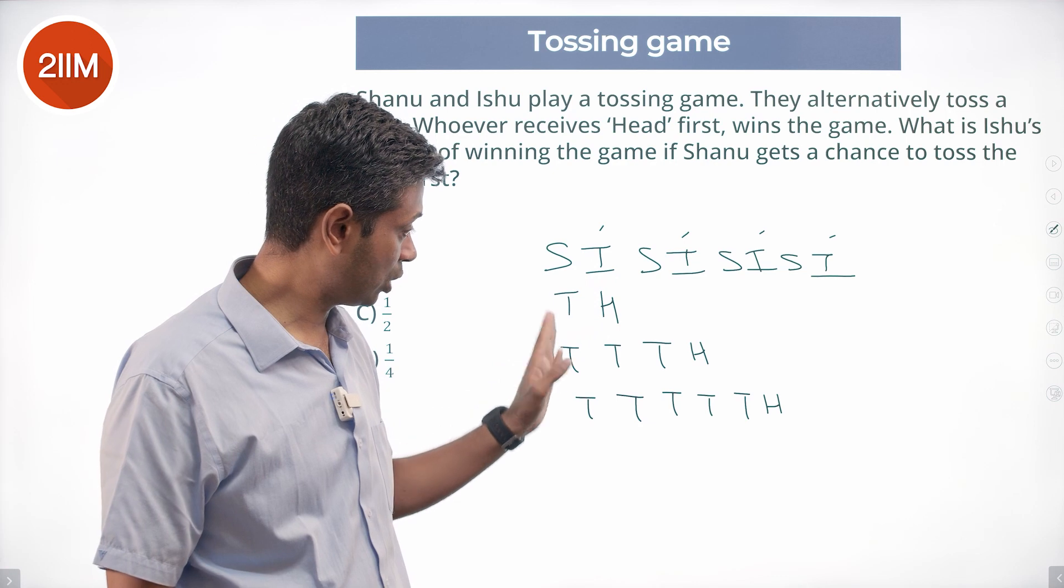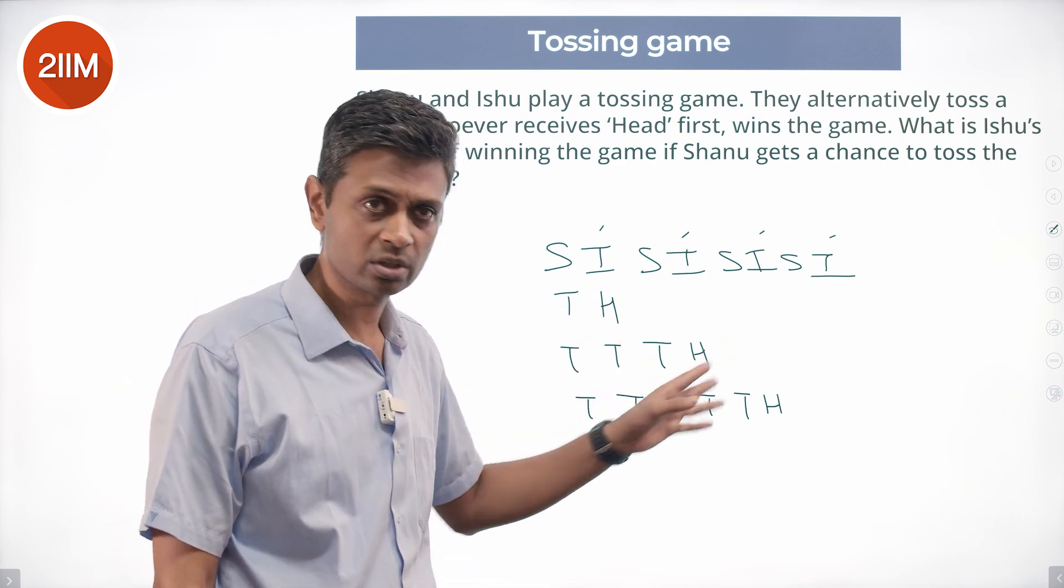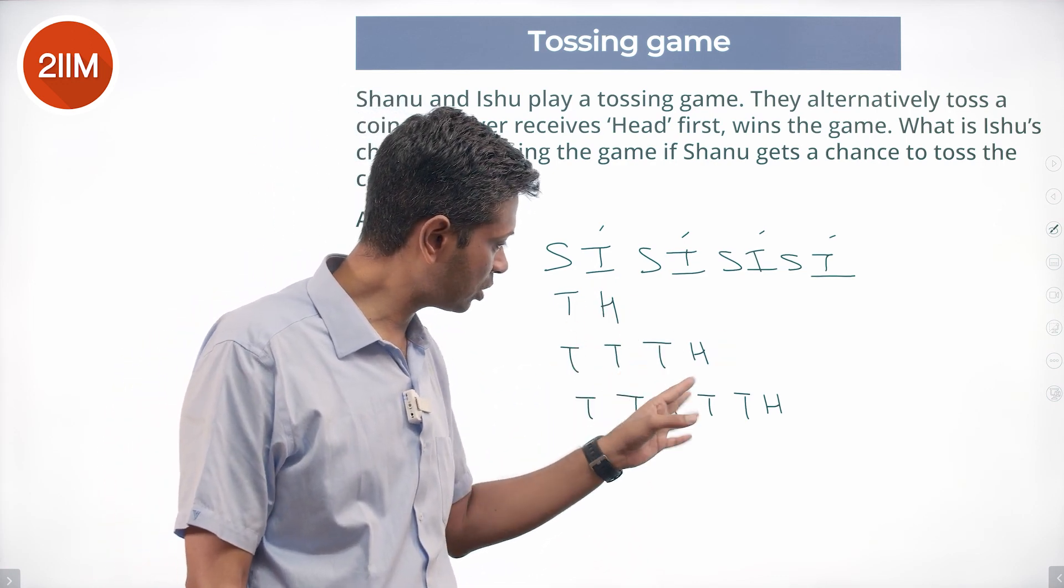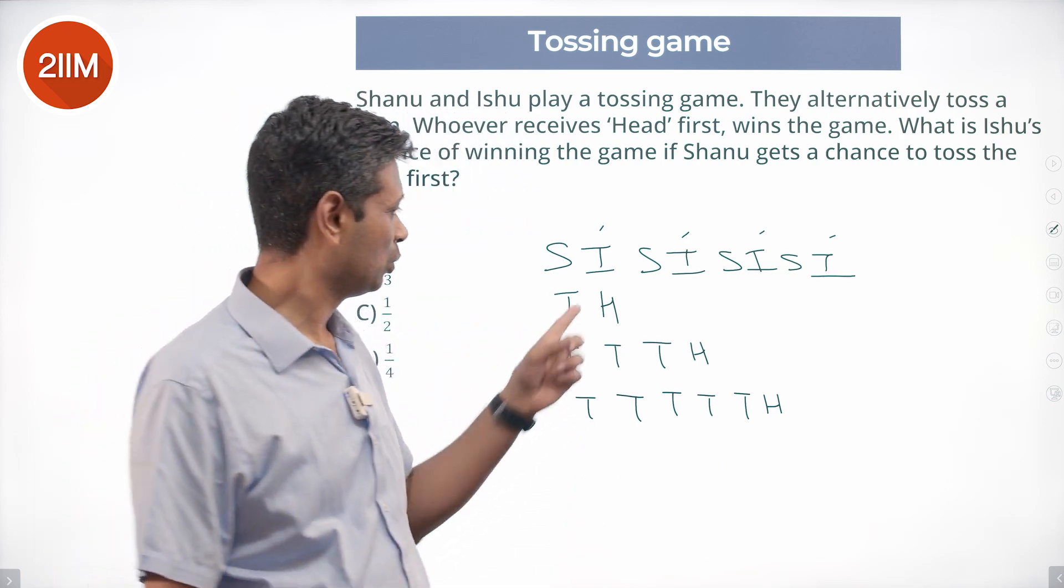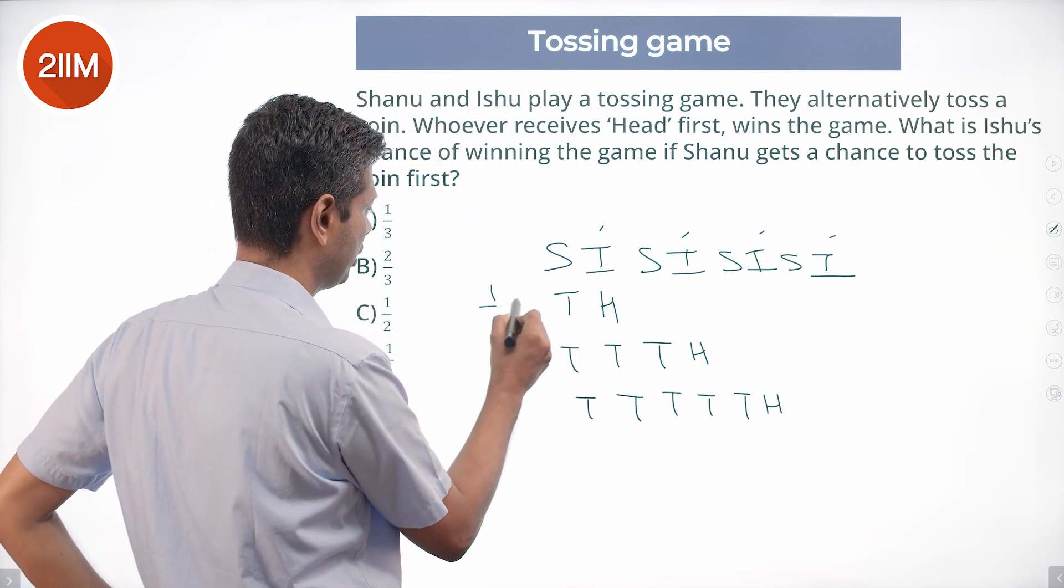The template of the question though: does not win, wins, does not win, does not win, does not win, wins. With a coin toss, what is the probability of this happening? 1 by 2 into 1 by 2.